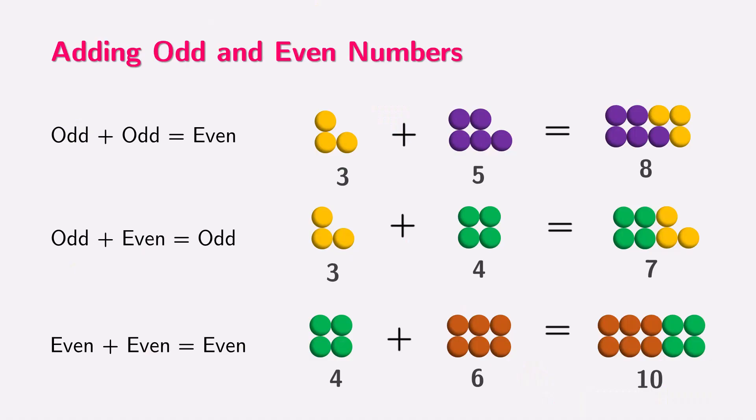Let's explore the patterns while adding odd and even numbers, which we have already discussed in the previous video. When we add two odd numbers together, like 3 and 5, the sum is an even number, 8. Why does this happen?